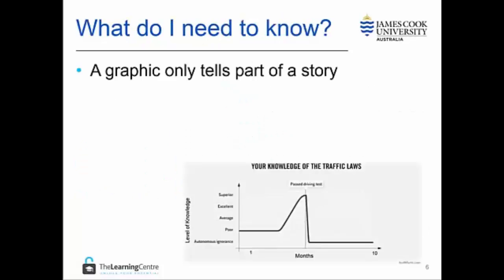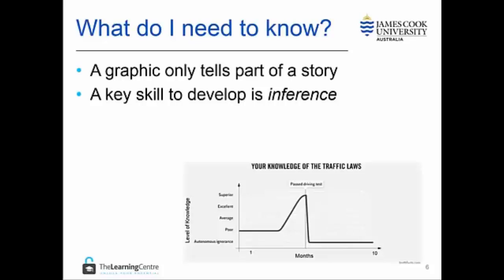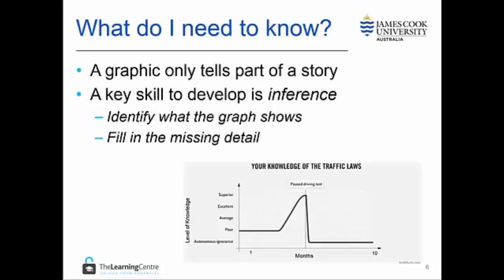It is important to remember that a graph only tells part of the story of a data set. There are things that graphs simply cannot or do not show, and it is therefore up to the viewer to interpret the graph correctly. One skill that is helpful to develop is inference. To do this we first need to identify what the graph shows and then ask ourselves what else is there to know which is not explicitly shown here.